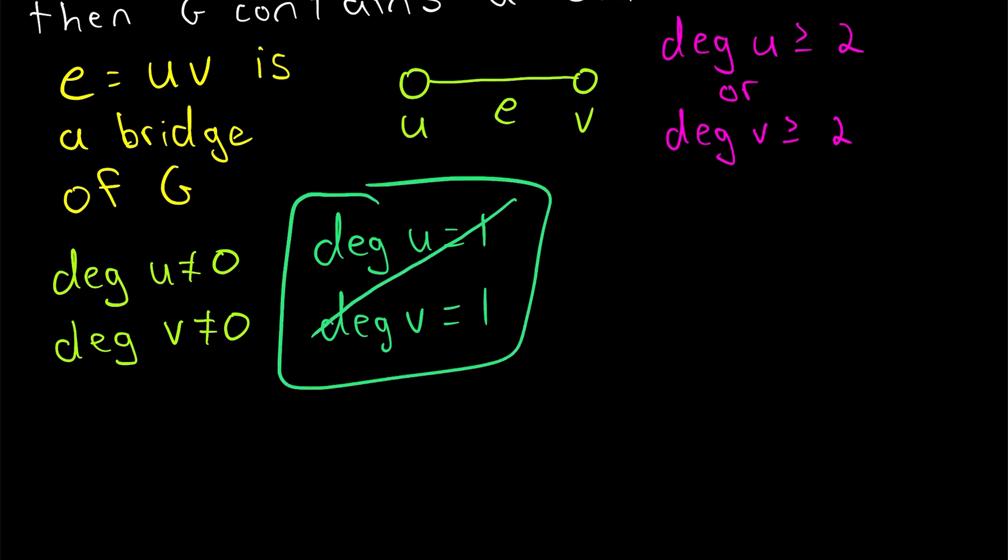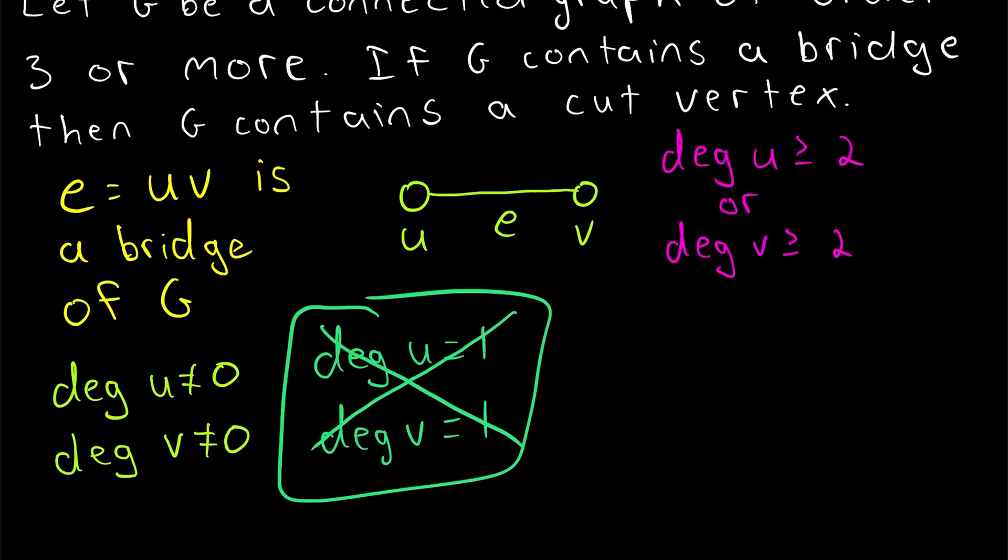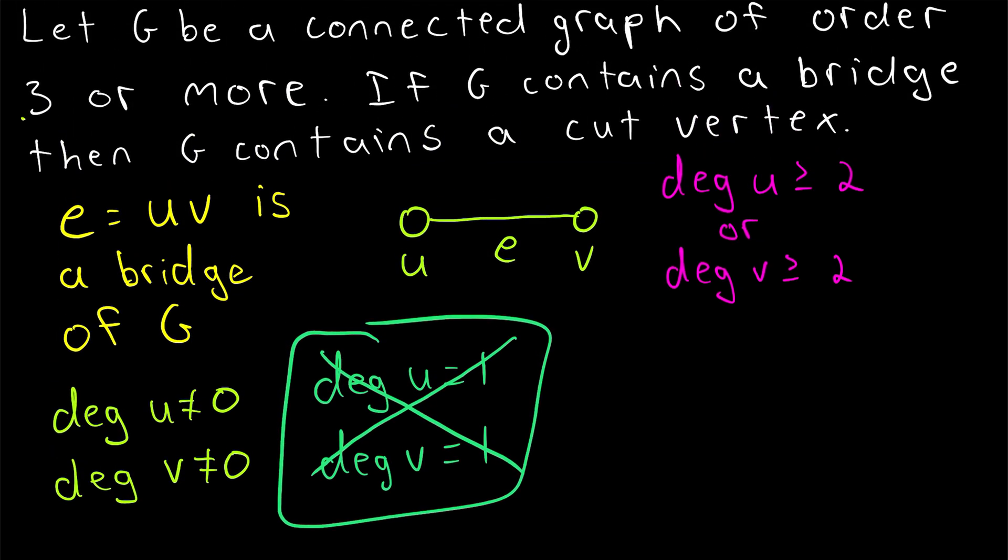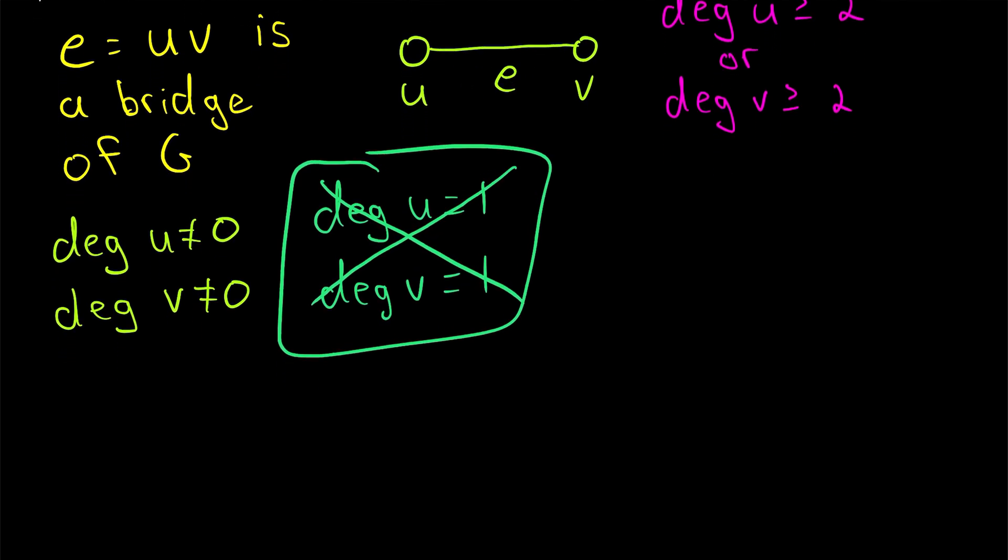A little bit of thought makes it clear that this is not possible. We know that because our graph has at least three vertices, and the graph is connected. So there's at least one other vertex here in the graph we could call W. If both U and V had degrees of 1, that would mean that they're only incident with this edge E, and so there cannot exist a path connecting either of these vertices to W, which would mean the graph is not connected. But we know it is,